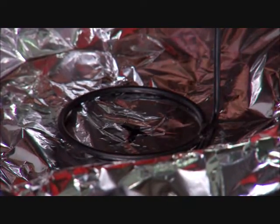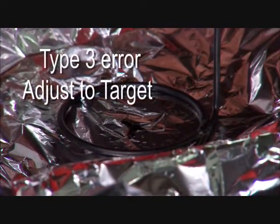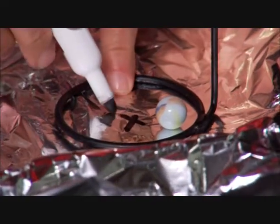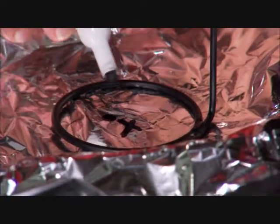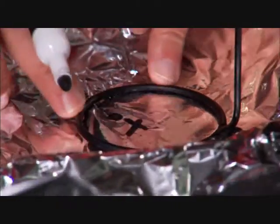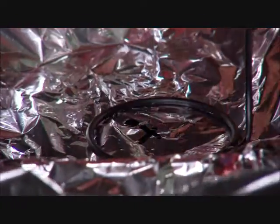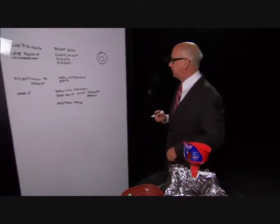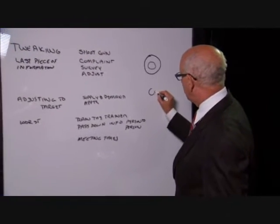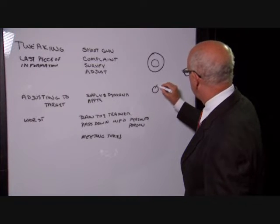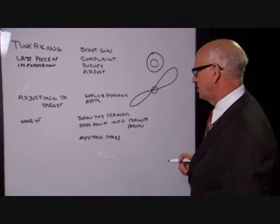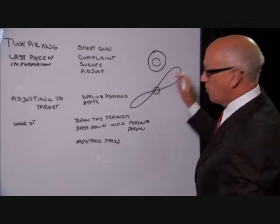The first error was tweaking — using just the last piece of information. A Type 3 error is where we use the target as our reference point. We drop the ball, get a spot, then use the target as the reference and move the same distance from where the ball hit in the opposite direction. After a while, instead of a tight band, it tends to go off into quadrants — getting farther and farther away from the target.